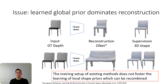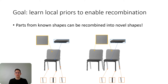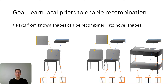We think that learning local priors is crucial for generalizing to novel shapes. Our goal is to learn local priors to enable recombination. The parts of a chair can be used to describe a new arrangement of two chairs because the parts are the same, but they can also be used to describe completely novel shapes such as a bed, because the poles of the bed have a very similar 3D structure as the legs of the chair.